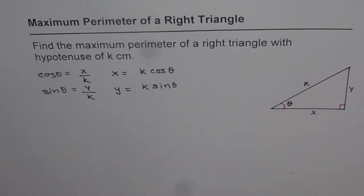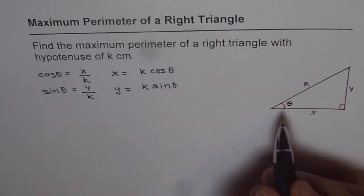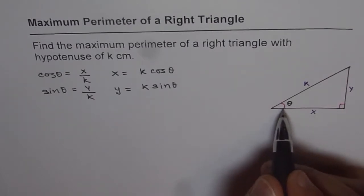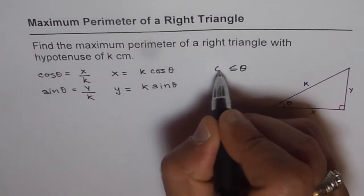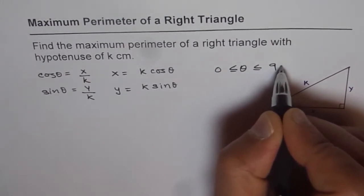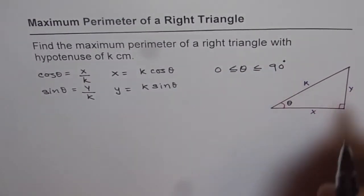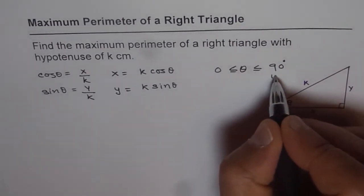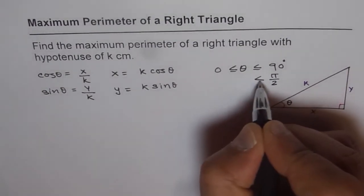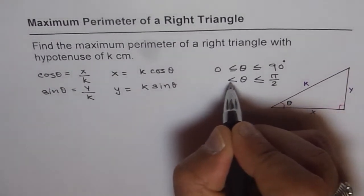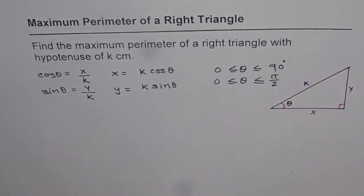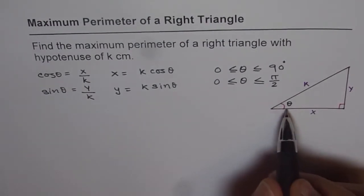One more thing to consider is that for a right triangle, this angle is 90 degrees, so what values can theta take? Theta ranges from 0 to 90 degrees — or rather, since we are doing calculus with trigonometry, we always work in radians, so theta is between 0 and π/2.